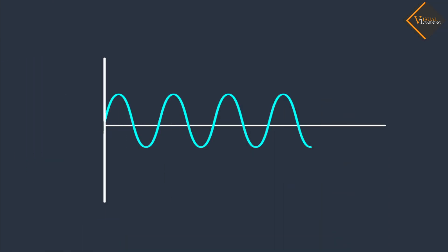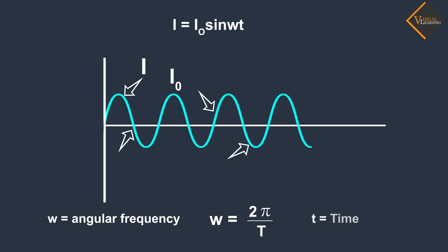We can represent alternating current in the following way, where at any given particular time, the current has a value denoted as I₀, which is the peak current. In this equation, omega is the angular frequency, whose value is equal to 2π by T. T represents the time period, in which one cycle is completed.